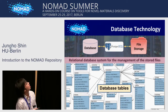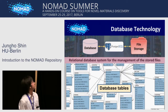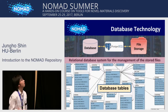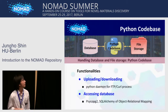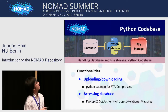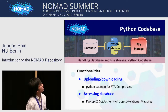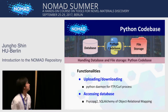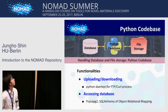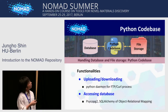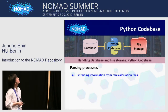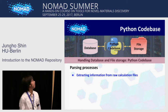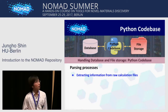We also use PostgreSQL technology to create a relational database system for the management of stored files. This is part of the whole database schema, and you can see there are many relationships between database tables. For handling the database and file storage, we developed a Python code-based system. That system covers functionalities such as uploading and downloading, accessing the database, and also the parsing process. Parsing means extracting information from the raw calculation files.